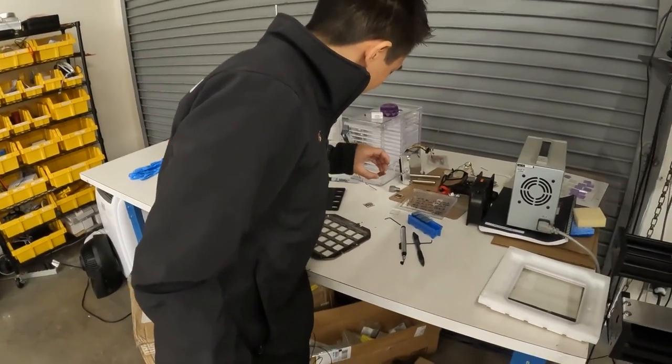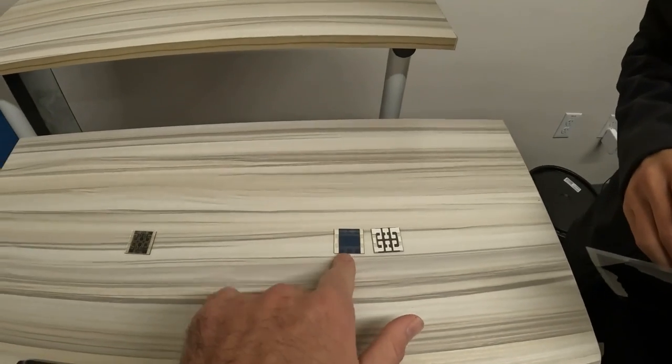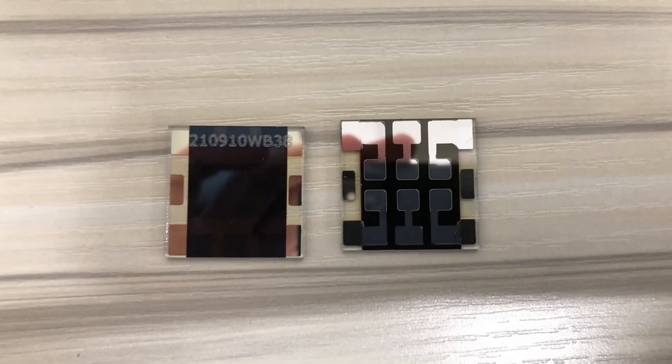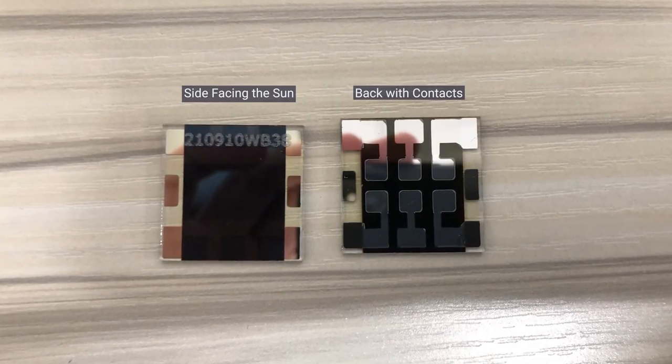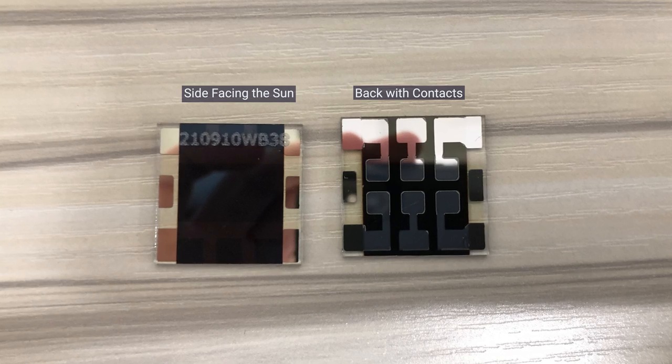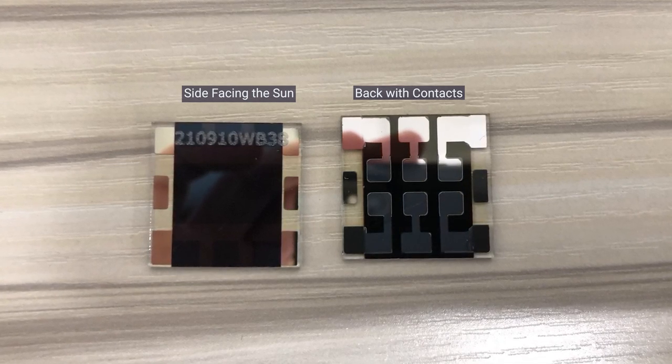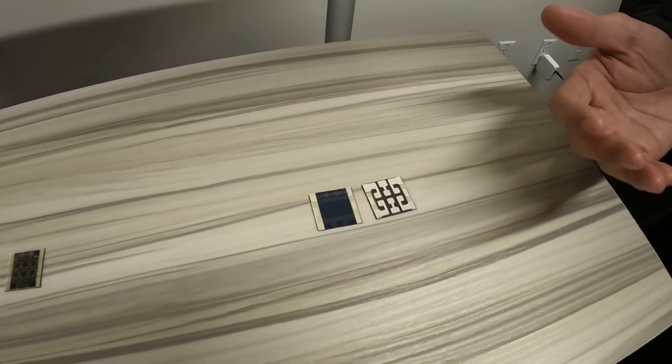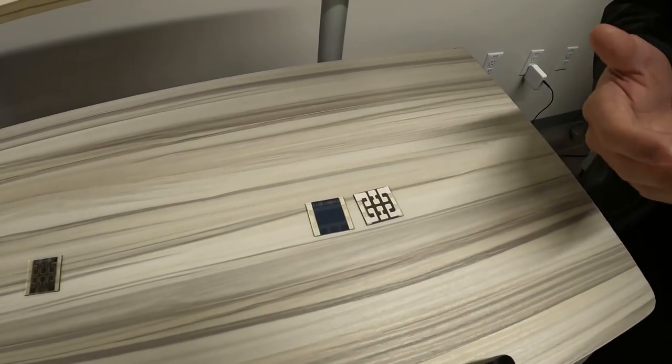So this is the side that's facing the sun? Correct. And this is the back of the cell? Yeah. The side facing the sun is actually you're looking through the glass. And on the other side of that glass, there's a perovskite layer kind of sandwiched between the contacts. So the contacts are what pull the charge out of the perovskite.